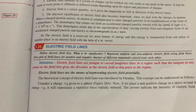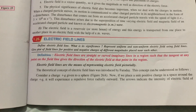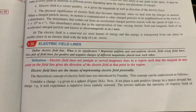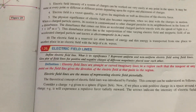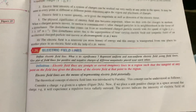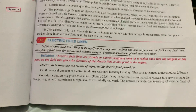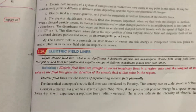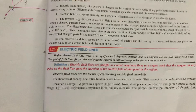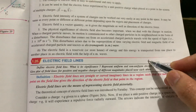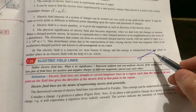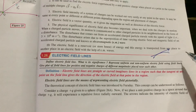The definition of electric field lines, as you can see here in the pink line: electric field lines are the straight or curved imaginary lines in a region such that the tangent at any point of the field gives the direction of electric field at that point in the region. So electric field lines can be straight or curved, and the tangent at any point gives the direction of the electric field. Suppose you have this kind of electric field and if you draw a tangent at this point, you will get the direction of your electric field.